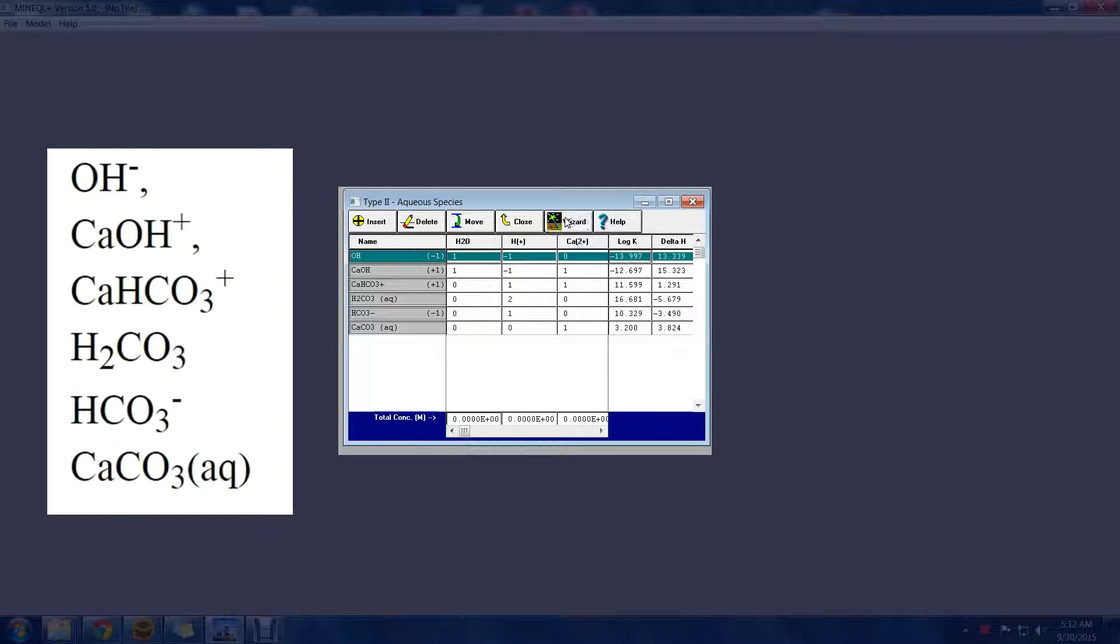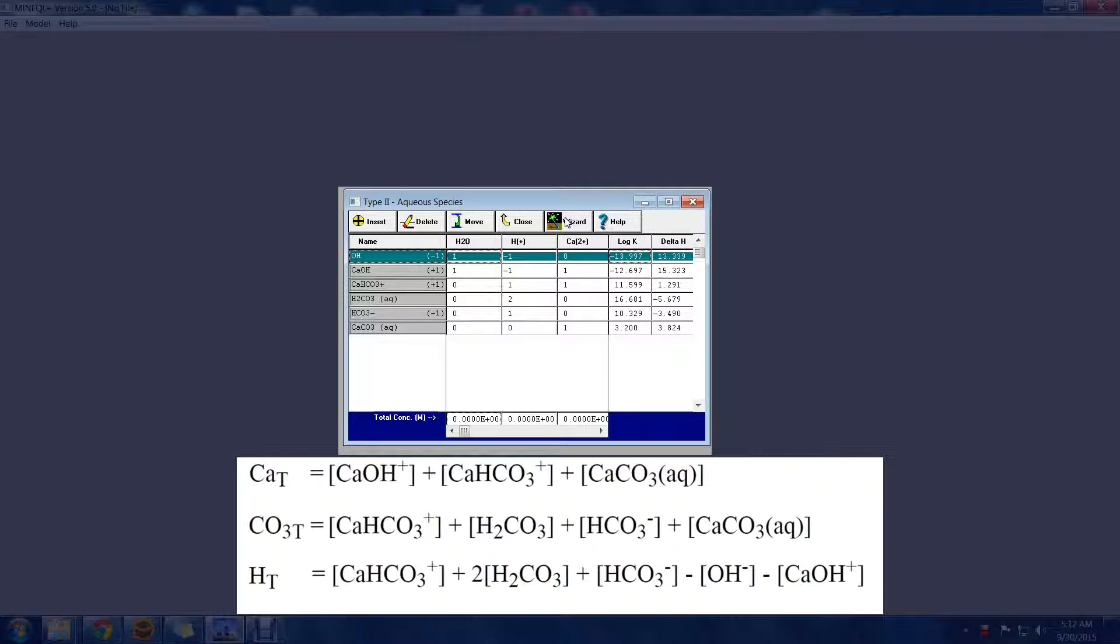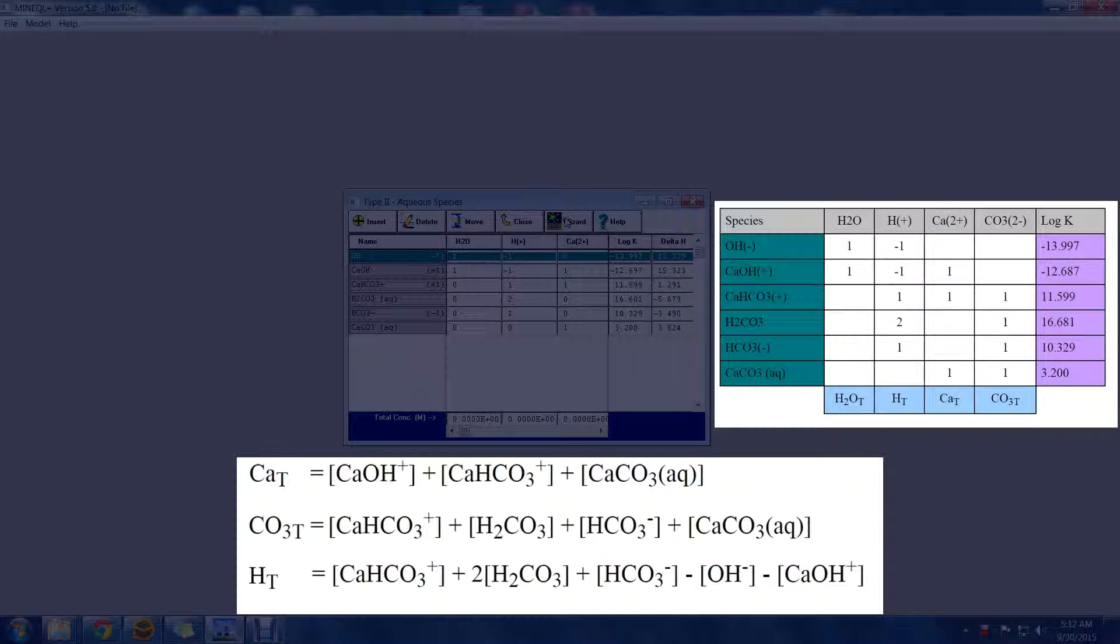The mass balance equations for this system are listed here in long format. Water is also a component in this system, but we're not going to focus on it. The activity of water is always equal to one and is treated like a fixed species. This is identical to what we are showing in the tab below, where each column corresponds to a mass balance equation.